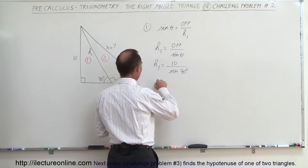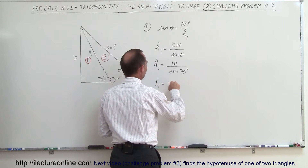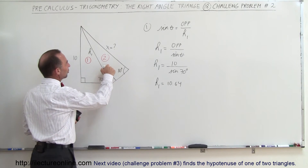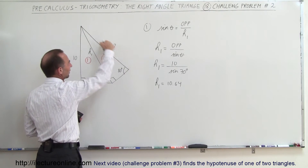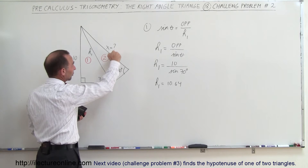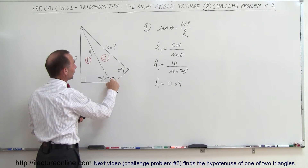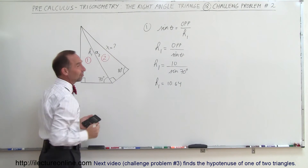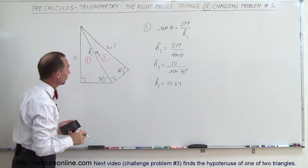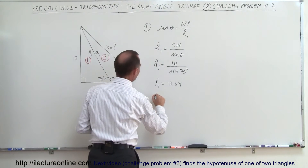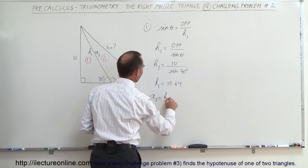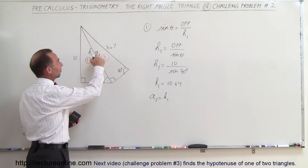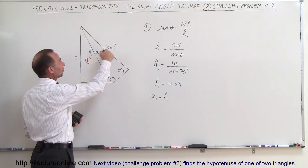So hypotenuse one is equal to 10.64. Notice that for triangle number two, the hypotenuse is always directly across from the right angle. Let's call this side A sub two, because this is for triangle two, and notice that A sub two equals hypotenuse one — they are the same length. Now we'll use this information to solve for x.